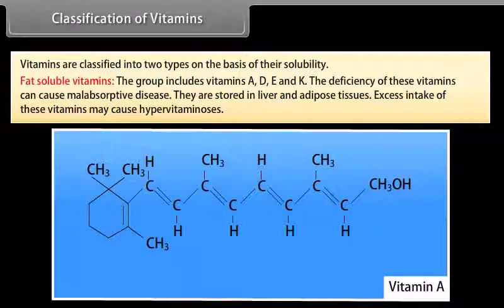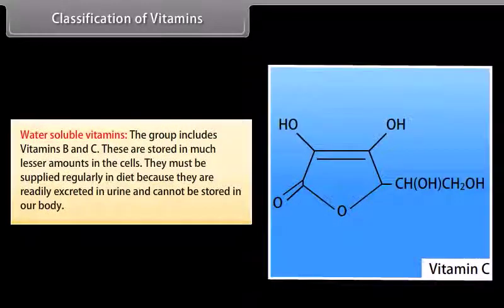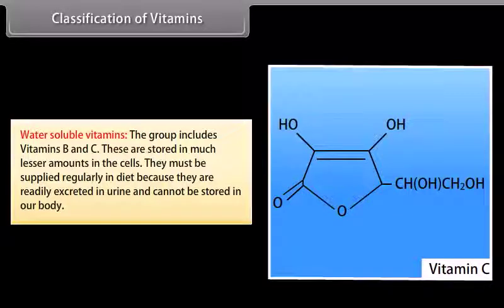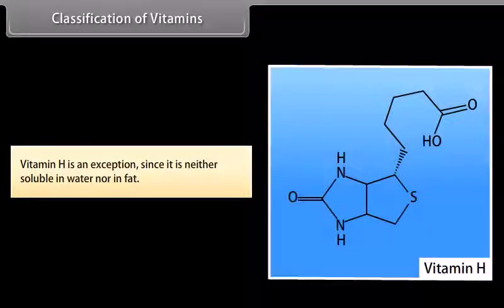Vitamins are classified into two types on the basis of their solubility. Fat-soluble vitamins include vitamins A, D, E, and K; deficiency can cause malabsorptive disease; they are stored in liver and adipose tissues; and excess intake may cause hypervitaminosis. Water-soluble vitamins include vitamins B and C; they are stored in lesser amounts in cells and must be supplied regularly in diet as they are readily excreted in urine. Vitamin H is an exception since it is neither soluble in water nor in fat.